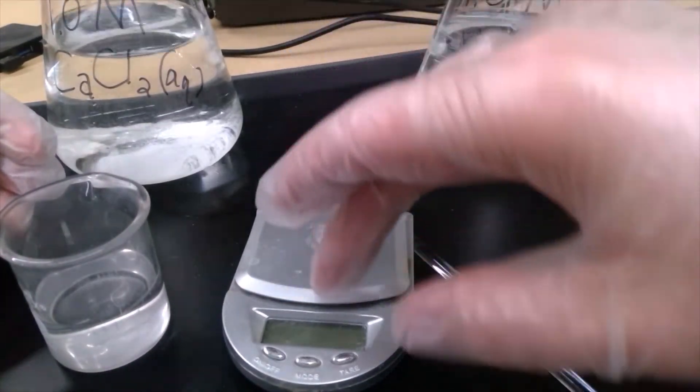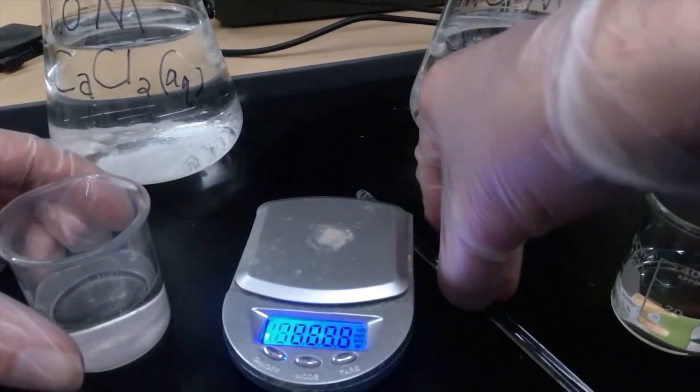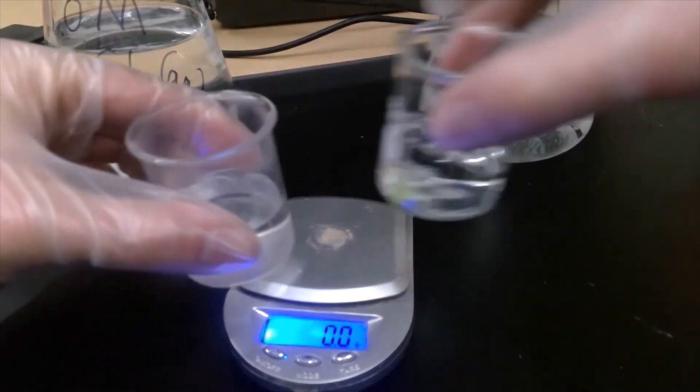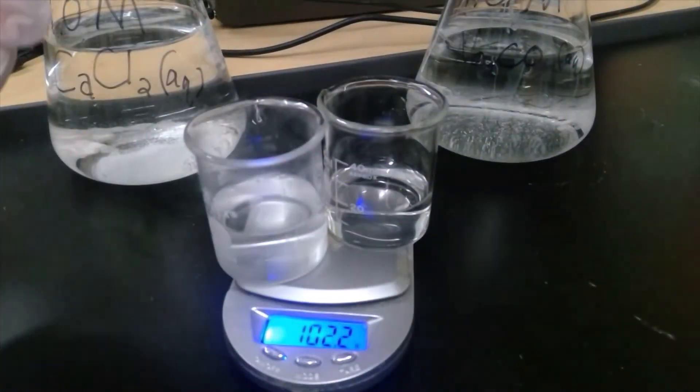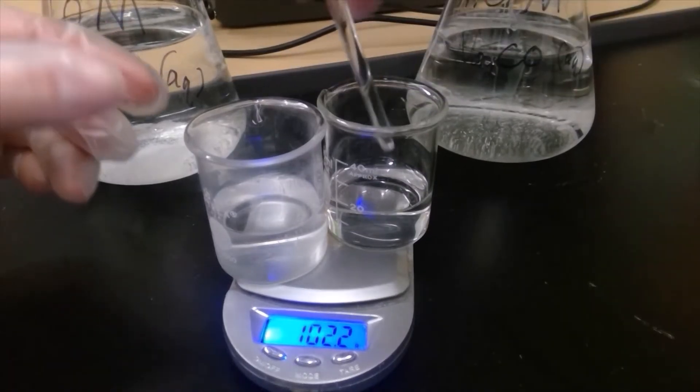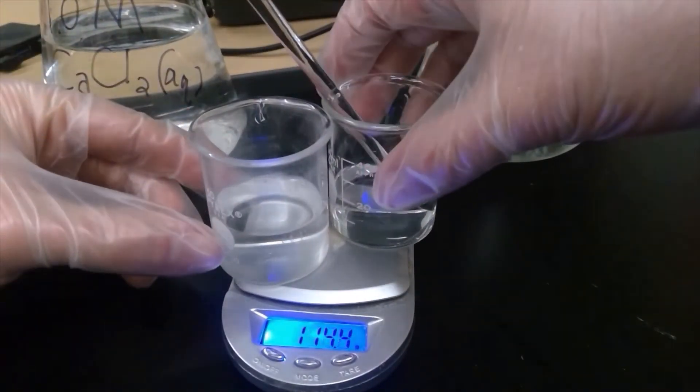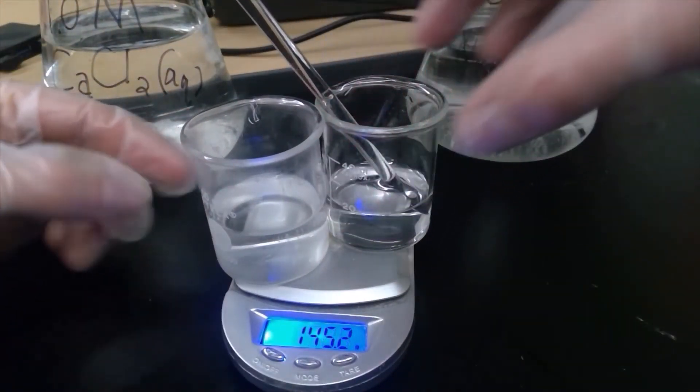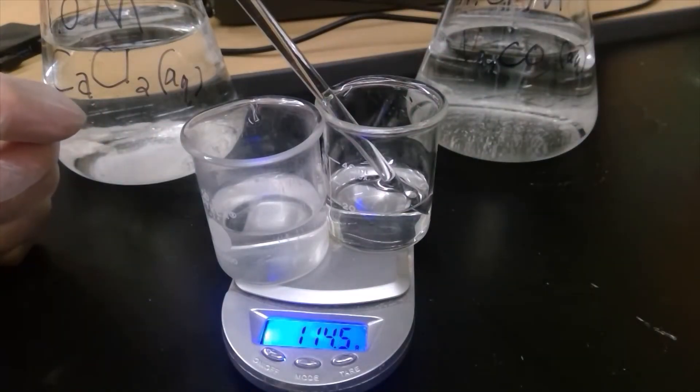Let's measure the mass before for these two beakers plus a stirring rod. 114.5 grams.